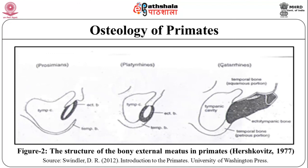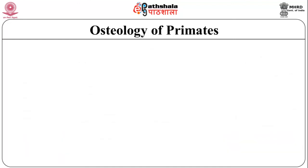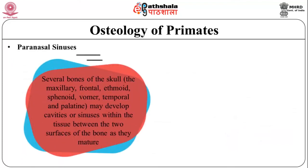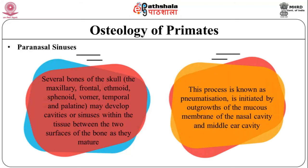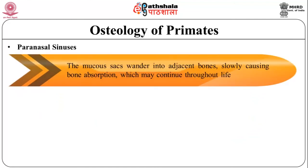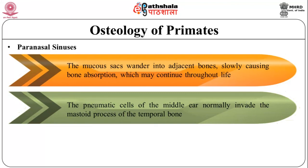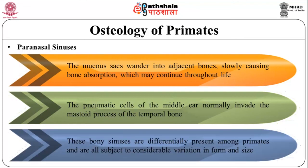This figure illustrates the structure of the bony external meatus in primates. Now let us see paranasal sinuses. Several bones of the skull — the maxillary, frontal, ethmoid, sphenoid, vomer, temporal, and palatine — may develop cavities or sinuses within the tissue between the two surfaces of the bone. This process is known as pneumatization, which is initiated by the outgrowth of the mucous membrane of the nasal cavity and middle ear cavity. The mucous membranes wander into adjacent bones, slowly causing bone absorption, which may continue throughout life. The pneumatic cells of the middle ear normally invade the mastoid process of the temporal bone. These bony sinuses are differentially present among primates and are all subject to considerable variation in form and size.